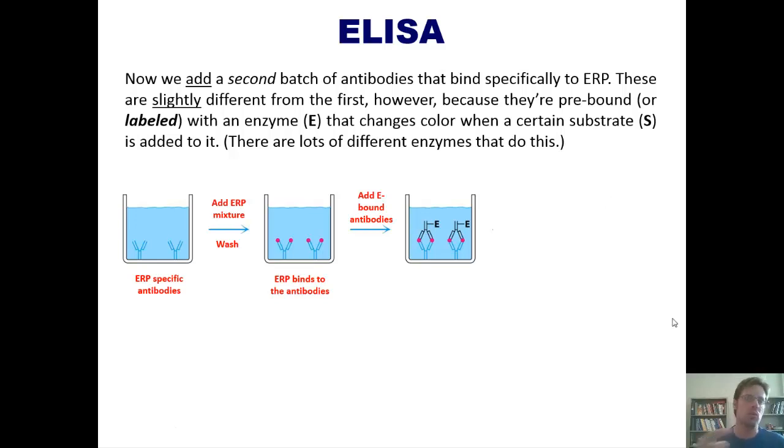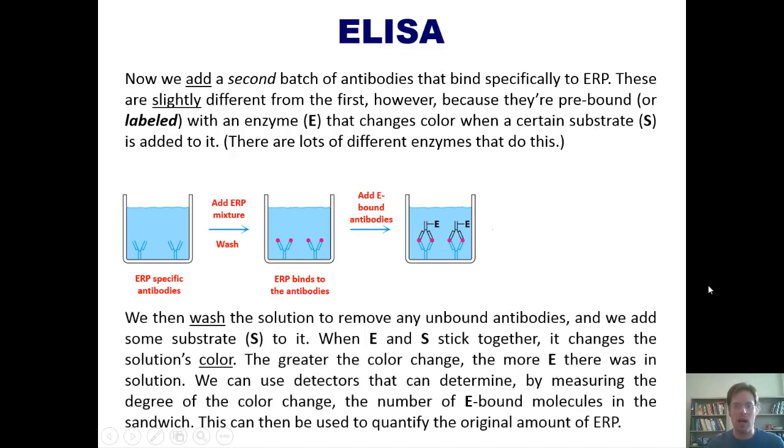Once we have this cute little sandwich assembled, what we do next is we wash the solution to remove any of the unbound excess antibodies that are attached to this enzyme that might be floating around solution. We get rid of all those, and then we add some substrate S to it. When E and S, this enzyme and substrate, stick together, it changes the solution's color. The greater the color change, the more enzyme there was in the original well.